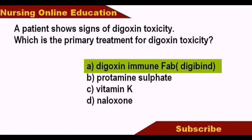Answer: Digibind. Heparin antidote is Protamine Sulfate; Warfarin antidote is Vitamin K; opioid overdose antidote is Naloxone. For digoxin toxicity, the antidote is Digoxin Immune Fab.